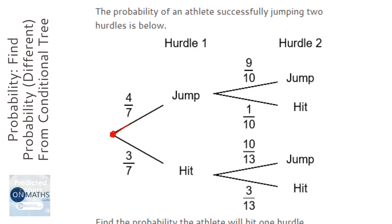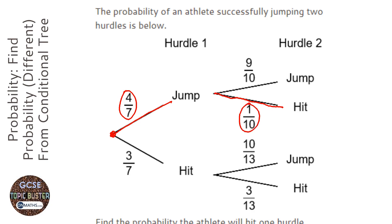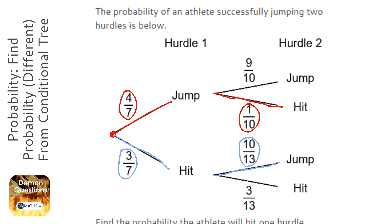If he jumps the first one, we're looking at him hitting the second one, because he has to hit a hurdle. If however he hits the first one, he can't hit the second one — otherwise we'd end up hitting two hurdles, and it says he will hit one hurdle. So he has to jump the second one. He's either going to hit the first one or the second one.